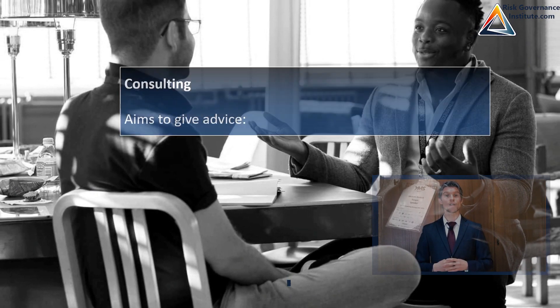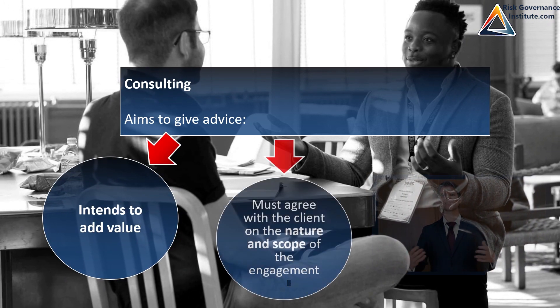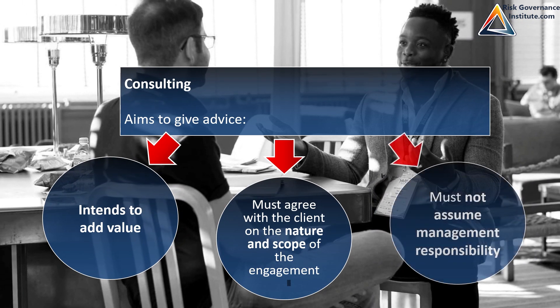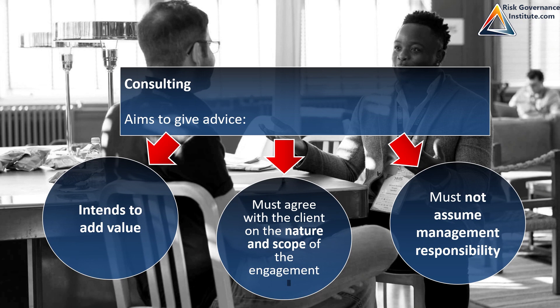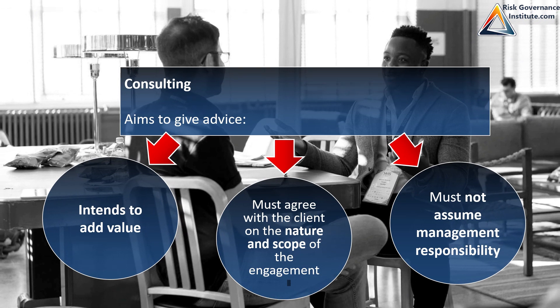The second type of services that we give as internal auditors is consulting. You're going to see some difference. In assurance, we aim to add value and improve an organization. But very importantly, listen — because this is important — the scope and nature of the engagement were not necessarily determined according to an assessment of risk. We basically don't take the means of verifying risks that we would in an assurance engagement. Here, the nature and scope were agreed with the client.